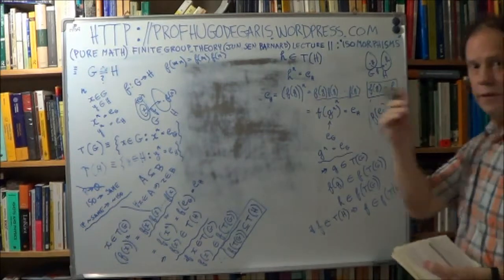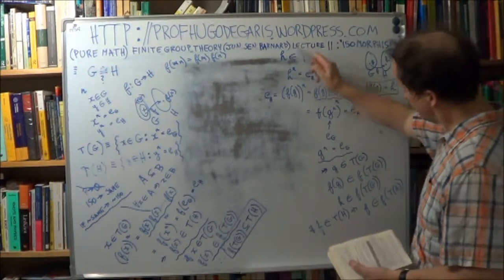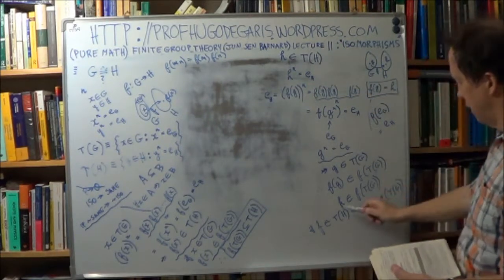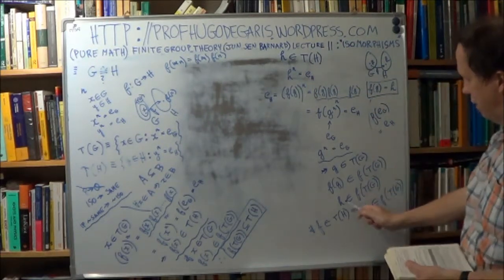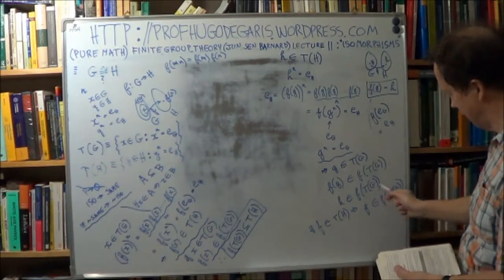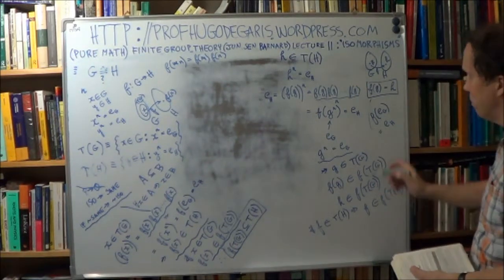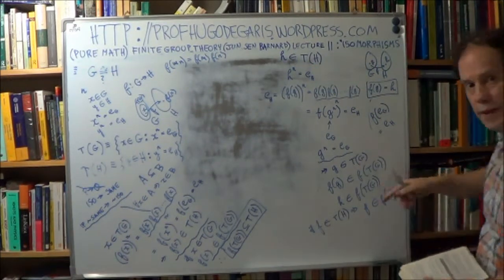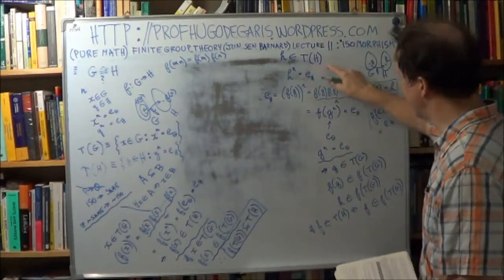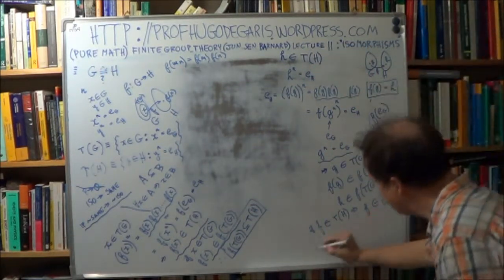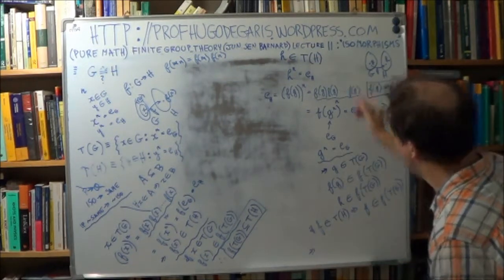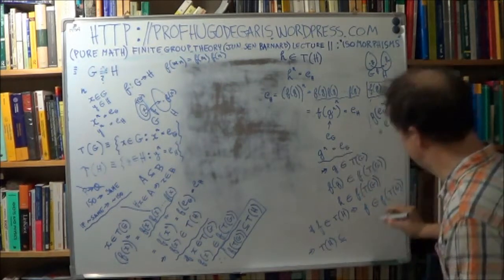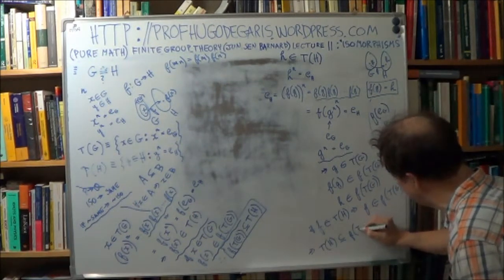That's the definition of a subset. So if an element in T(H) belongs to F of T(G), that implies that T(H) is a subset of F of T(G). So T(H) is a subset of F of T(G). That's your second part result.